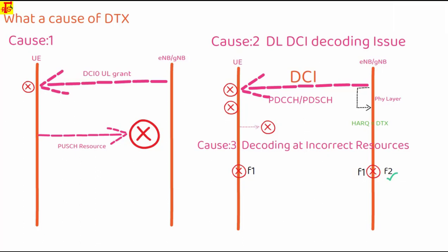In which case, eNodeB will find low energy at the resources where it is trying to decode the HARQ. But obviously, the main reason is that UE has transmitted it at some other frequency resources, so eNodeB is not able to decode.